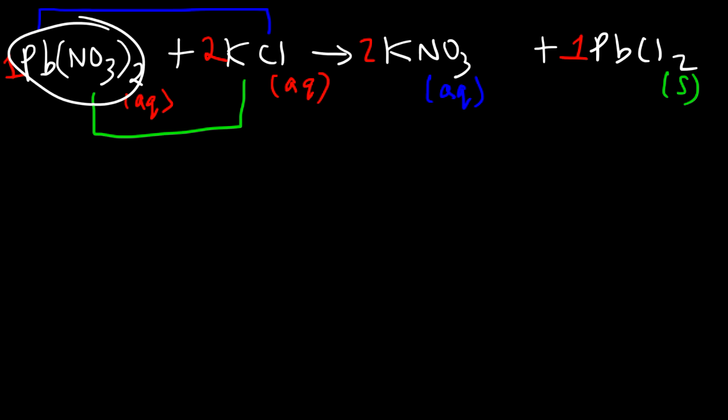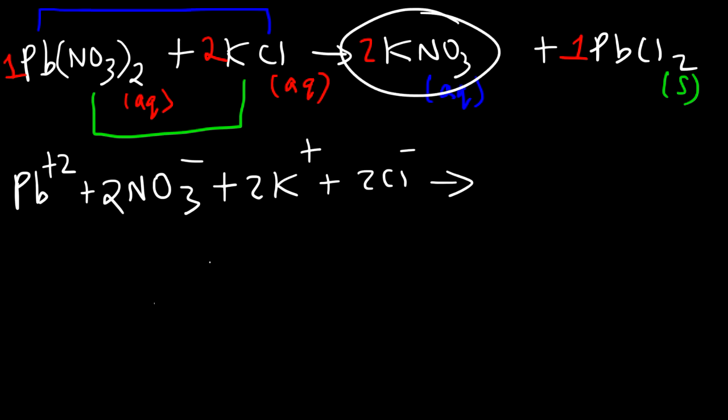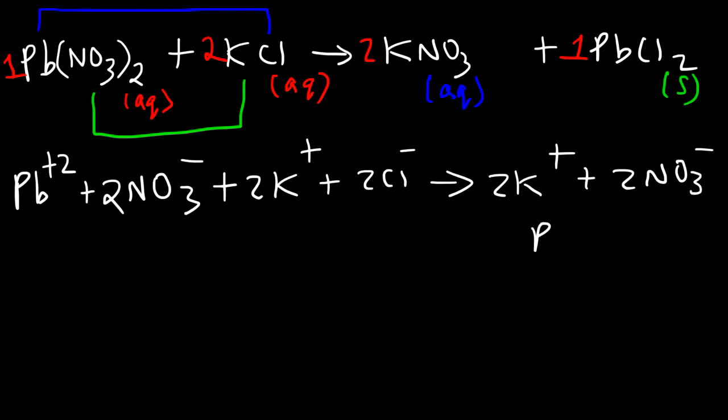So lead 2 nitrate we're gonna have to decompose it into ions. So we have a Pb plus 2 ion and 2 nitrate ions. Next we need to break up KCl. So we're gonna have two potassium plus ions and two chloride ions. And then potassium nitrate is also an aqueous phase so that's 2K plus 2 NO3. And this we're not going to change it. We're just going to rewrite it as PbCl2 in the solid phase.